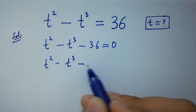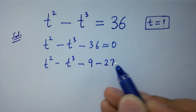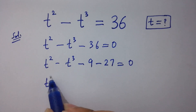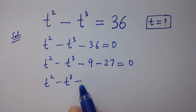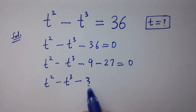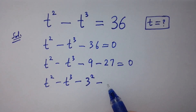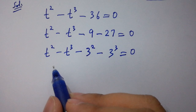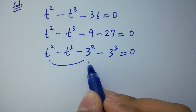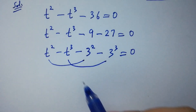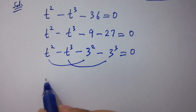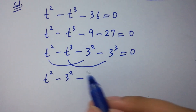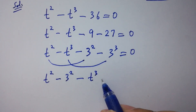t-squared minus t-cubed minus 36 is the same as minus 9 minus 27 equal to 0. Here, 9 is the same as 3-squared and 27 is the same as 3-cubed. We can write it as t-squared minus 3-squared, minus t-cubed minus 3-cubed.